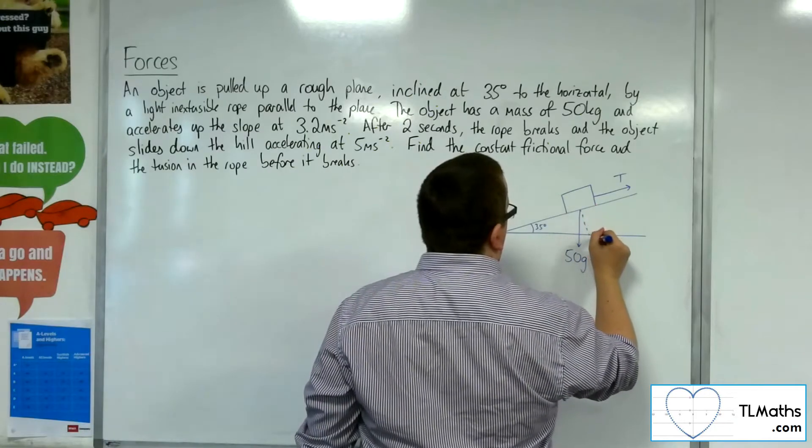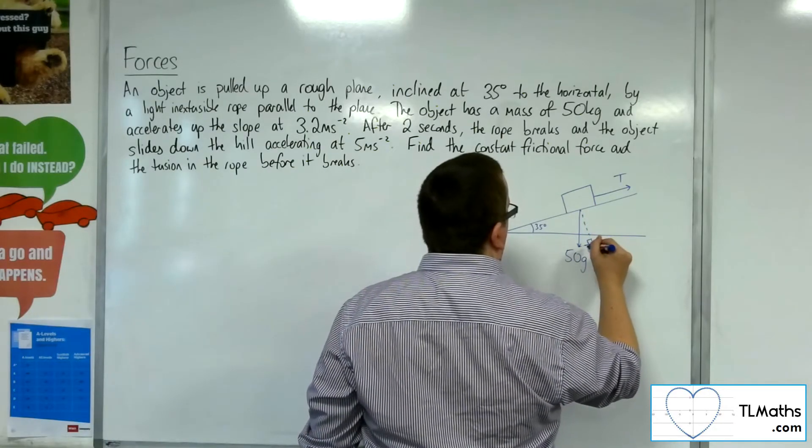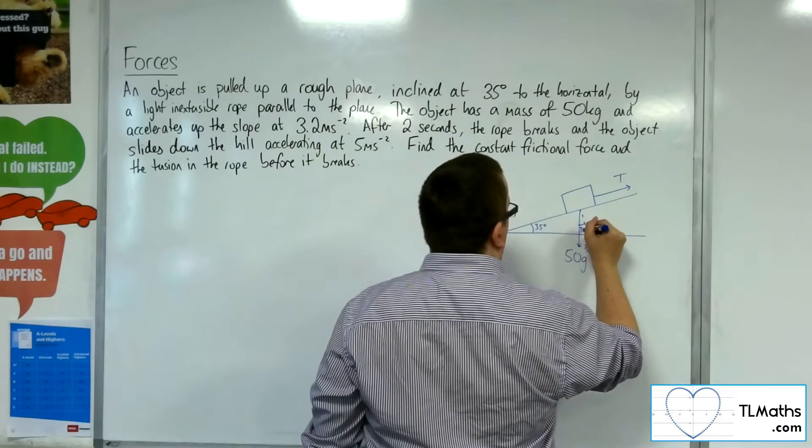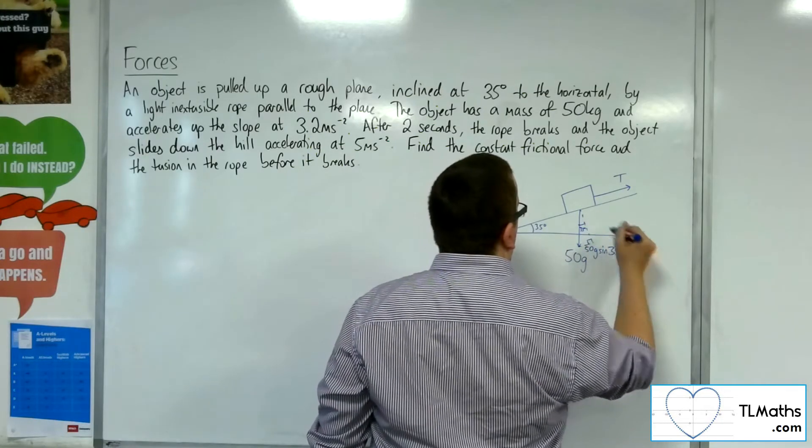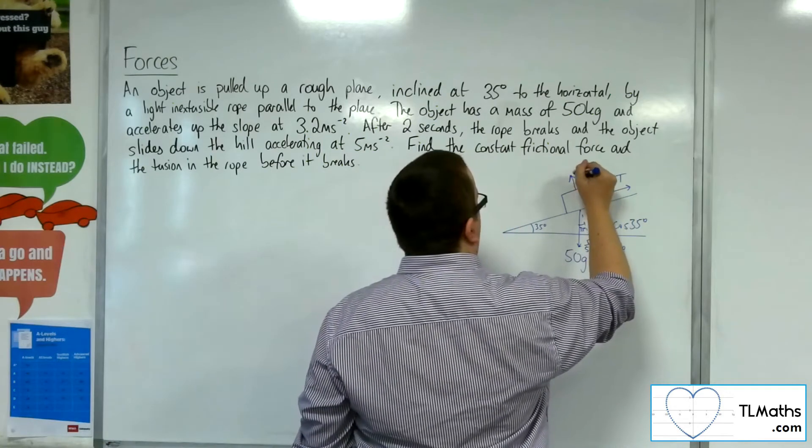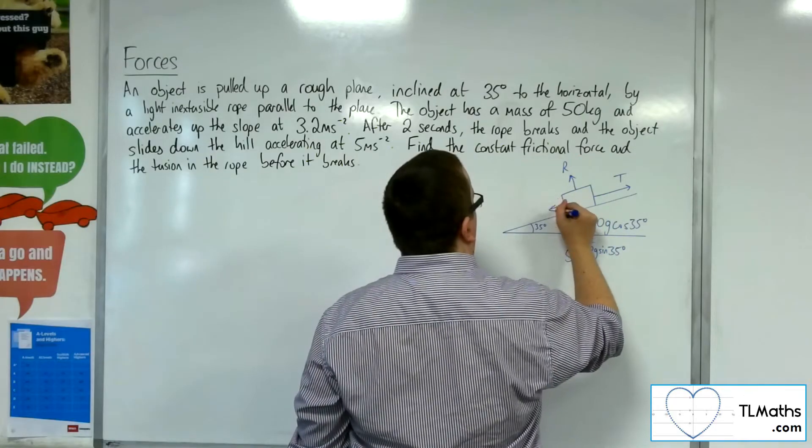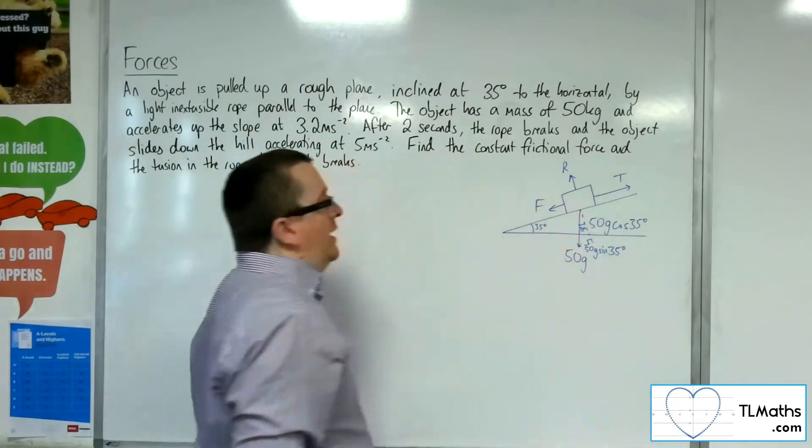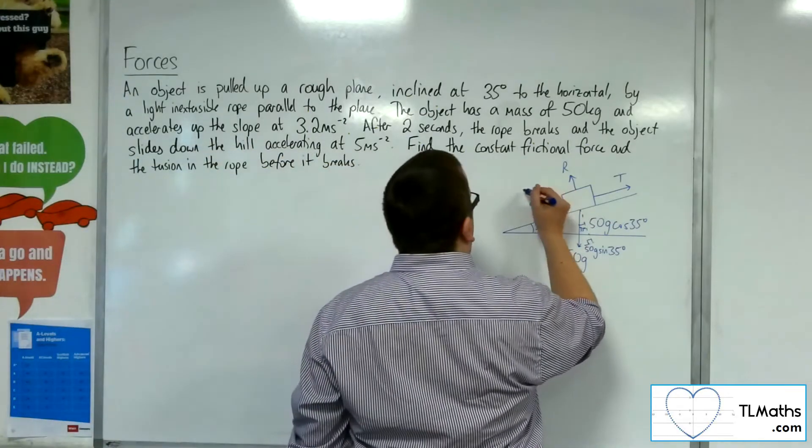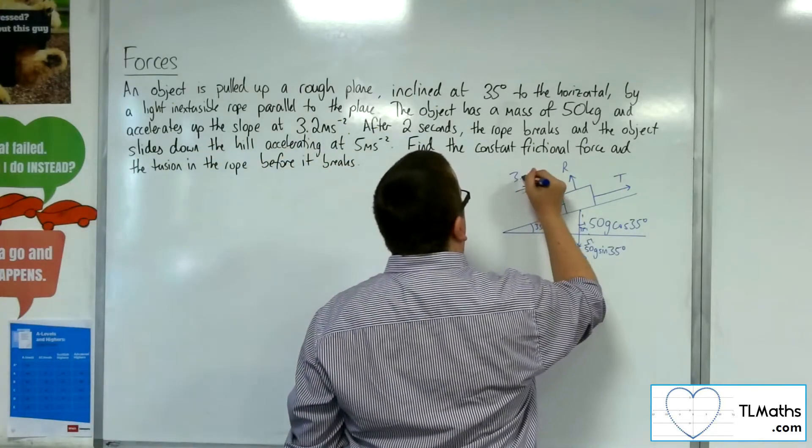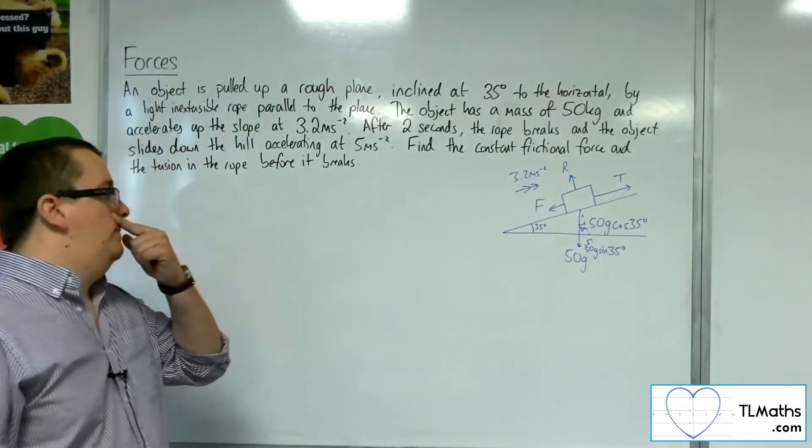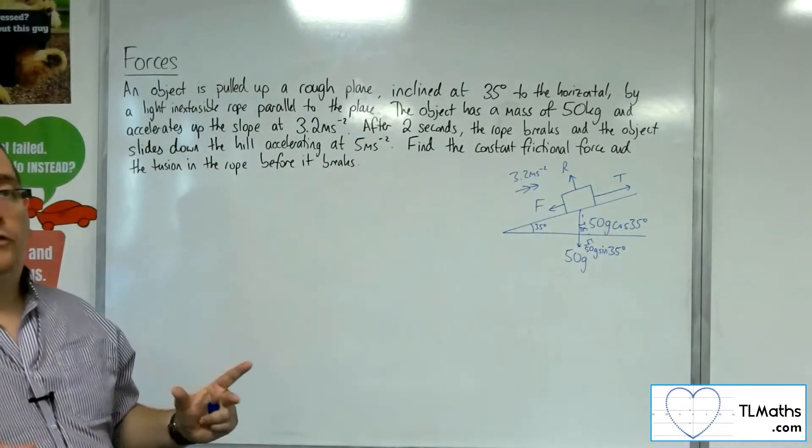We can divide that up into its component parts, so 50g sin 35 and 50g cos 35. I've got the normal reaction force and I'm going to have a frictional force working against the direction of motion. We're accelerating at 3.2 metres per second per second. That's the first stage.